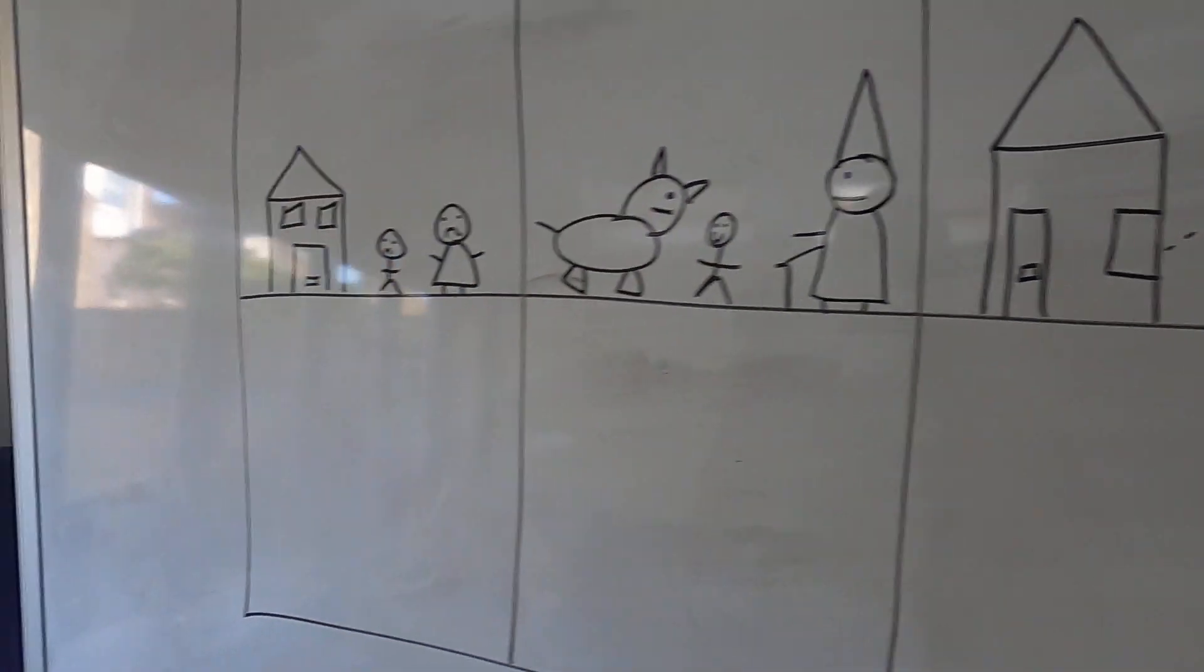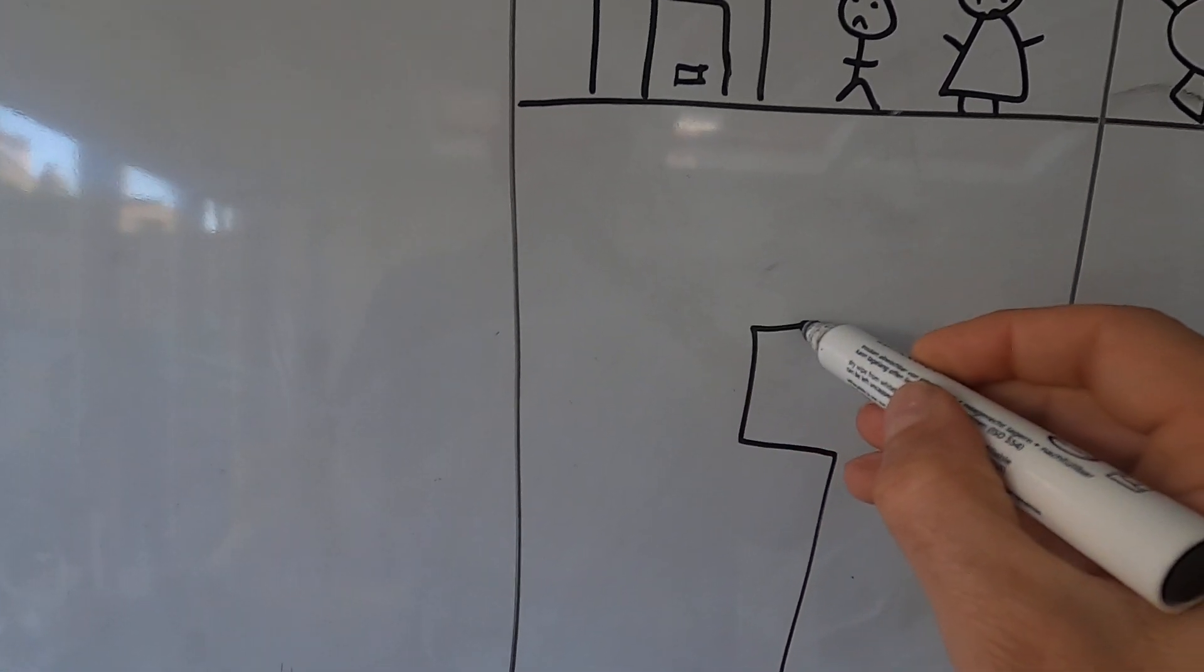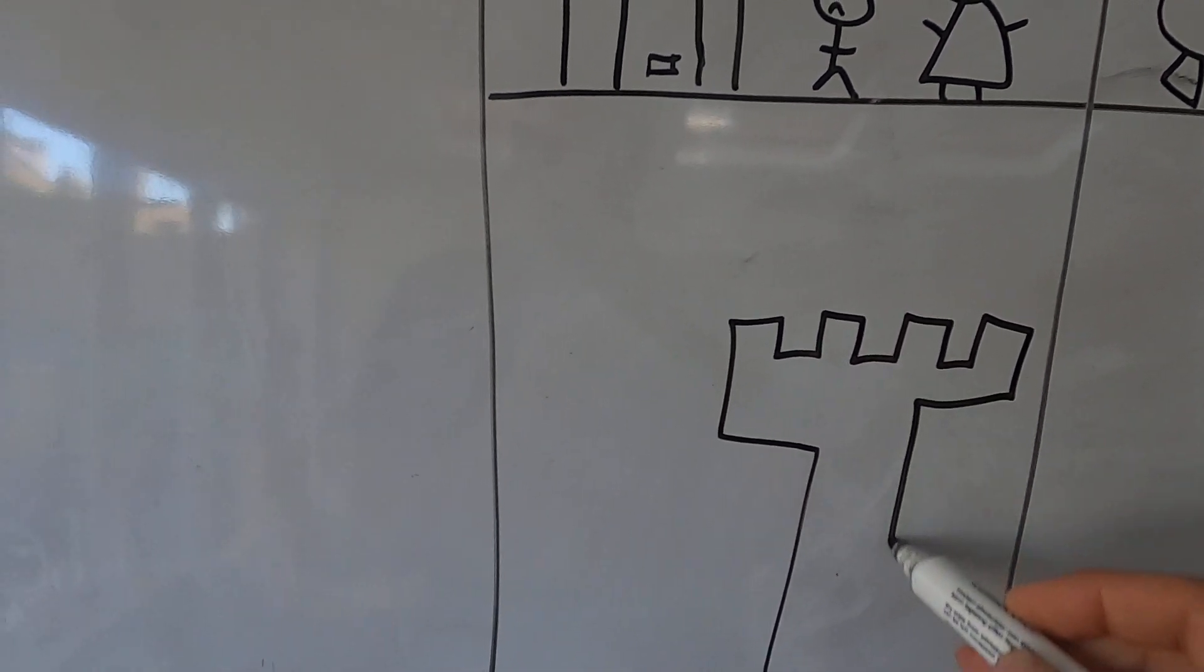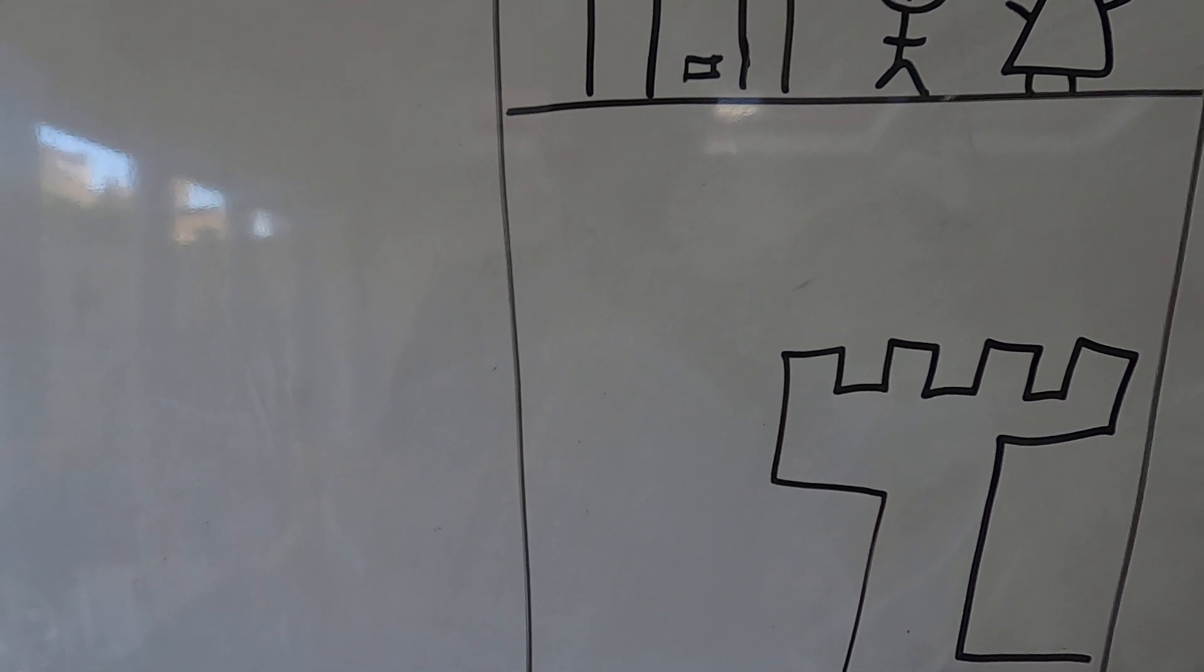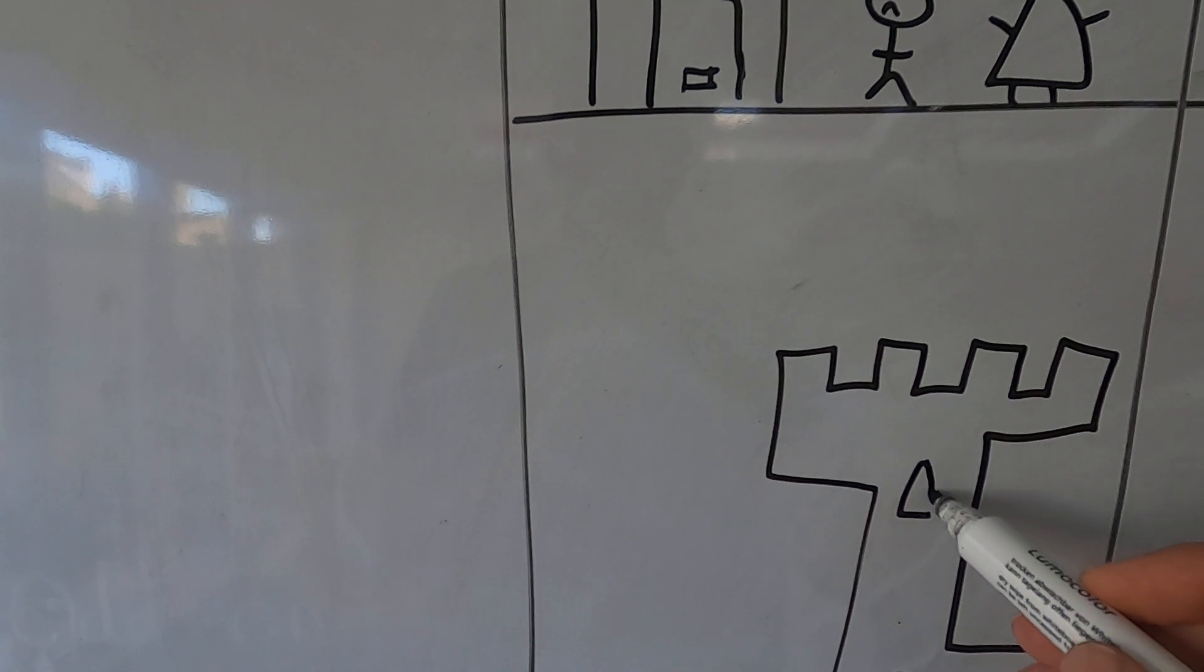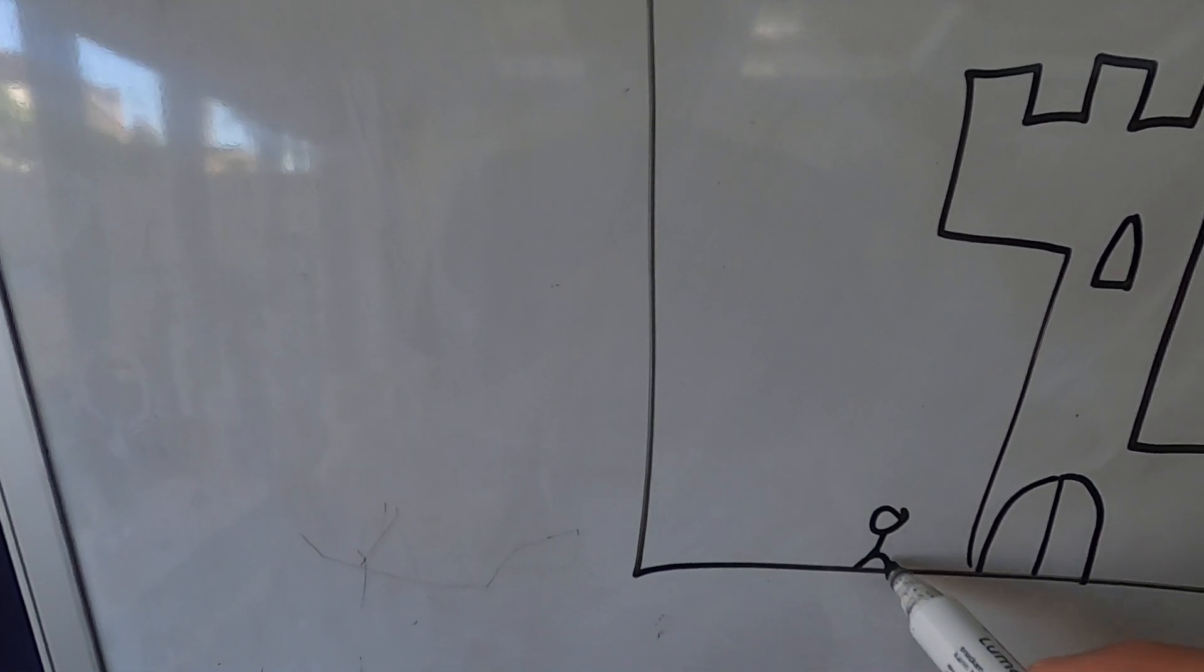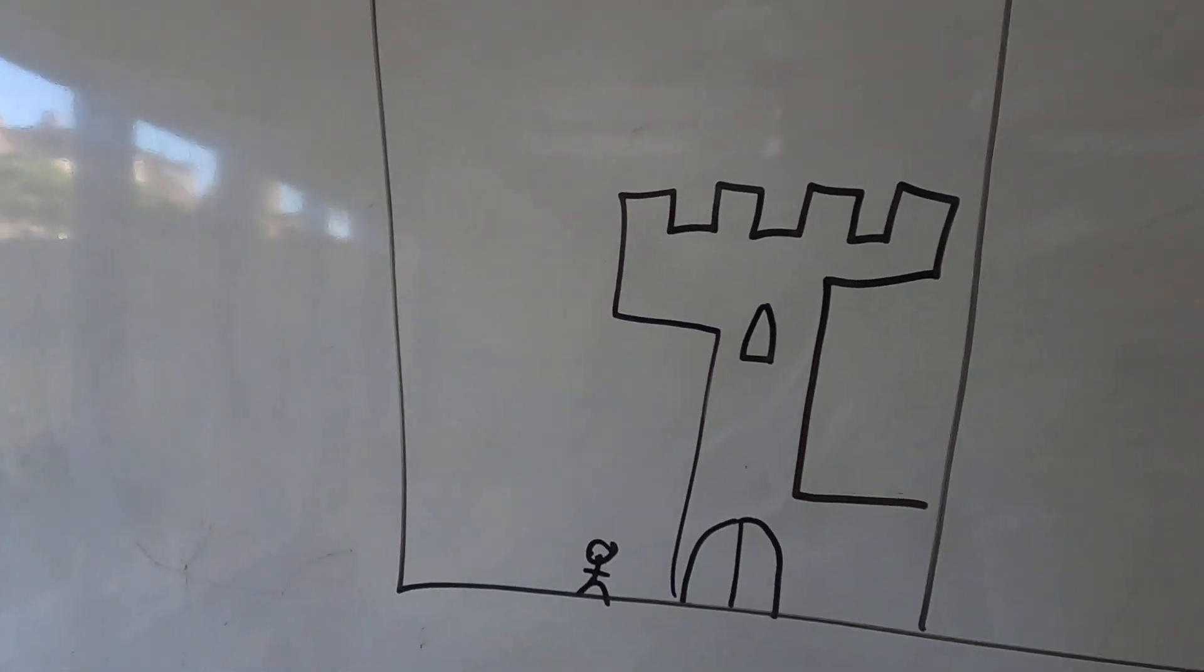When he got to the top what did he find? He found a castle. A castle with a door. A window. There's Jack. Because it's a very big castle. Look how small he is. And he went inside.